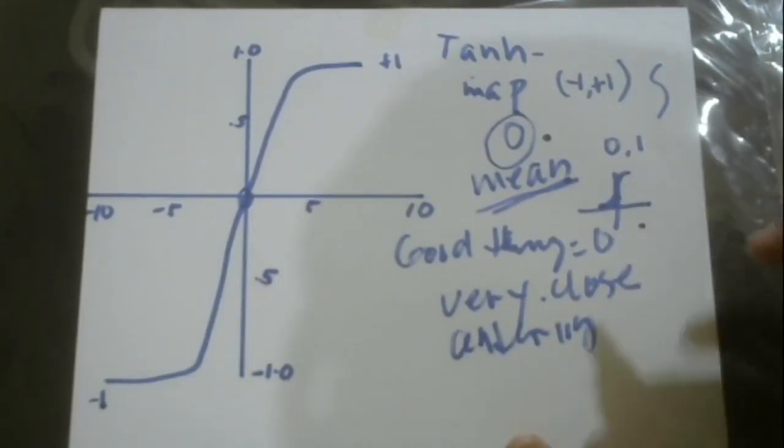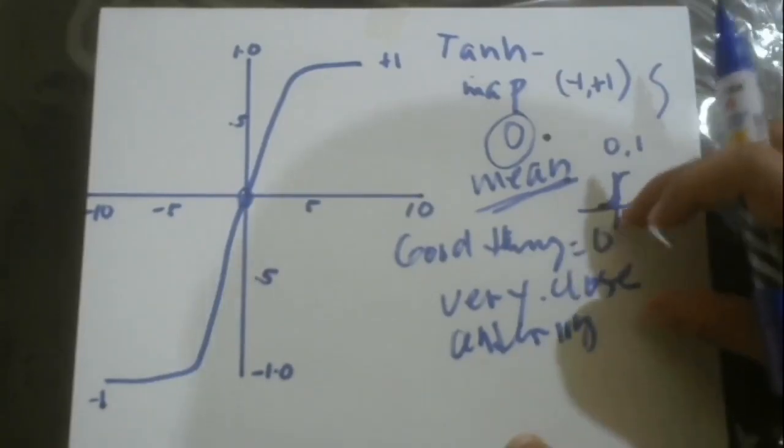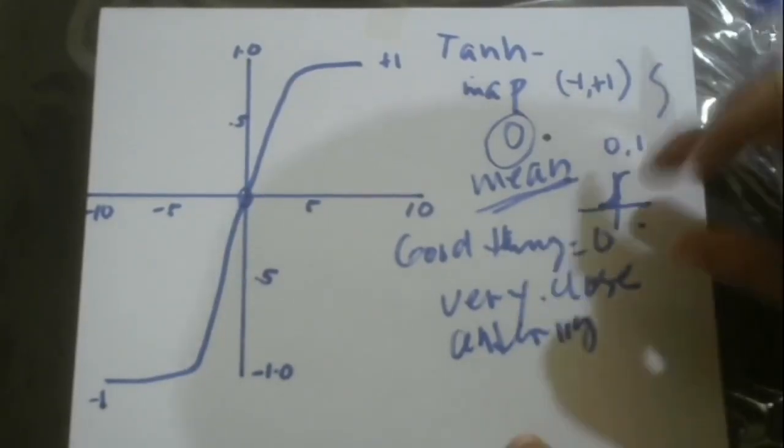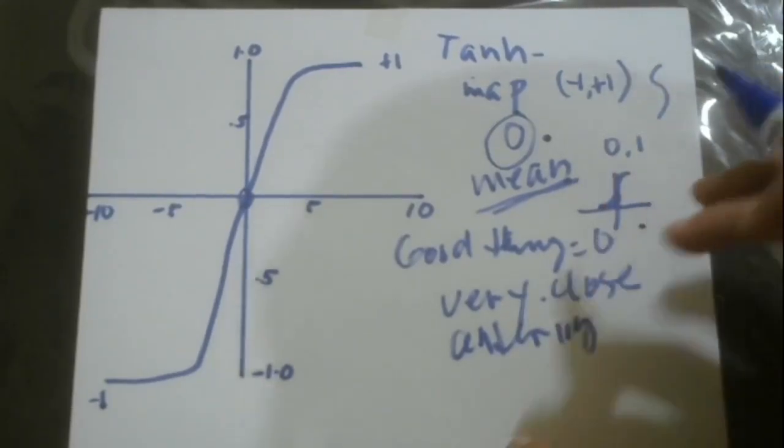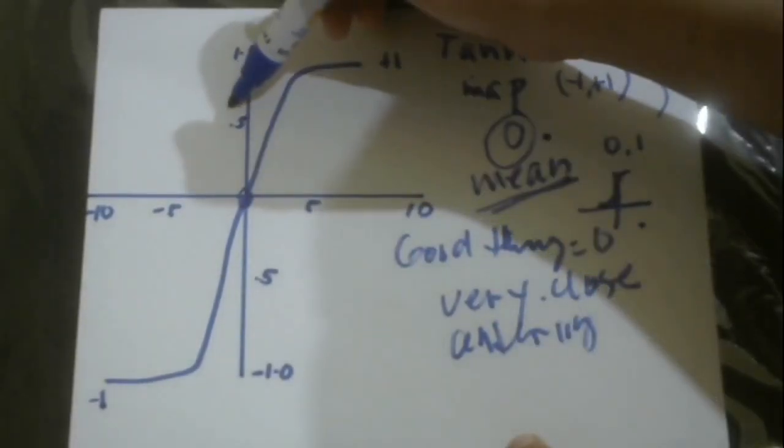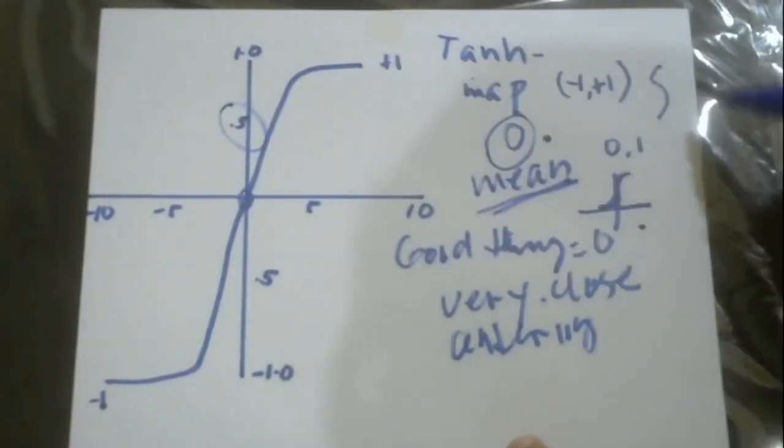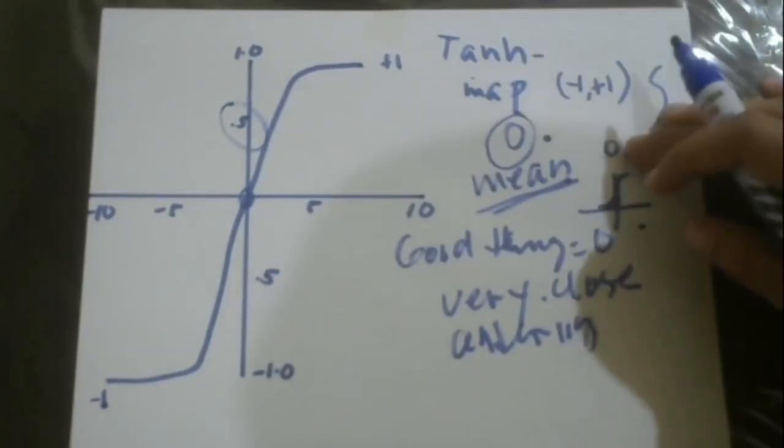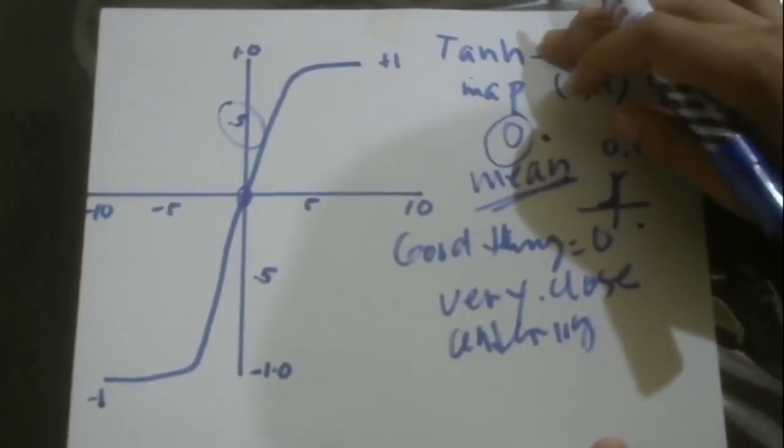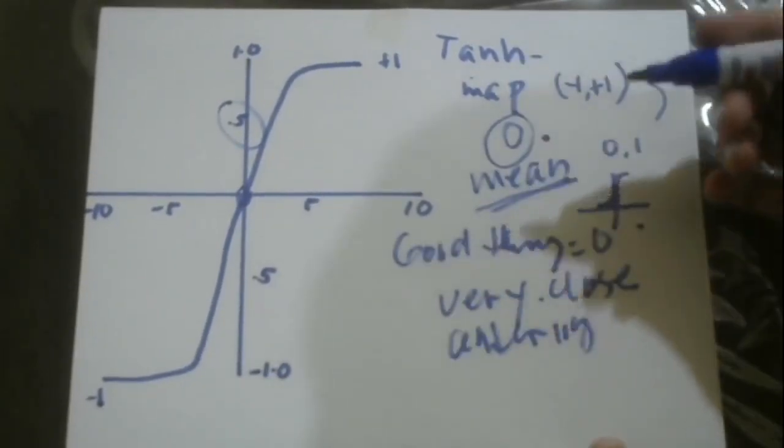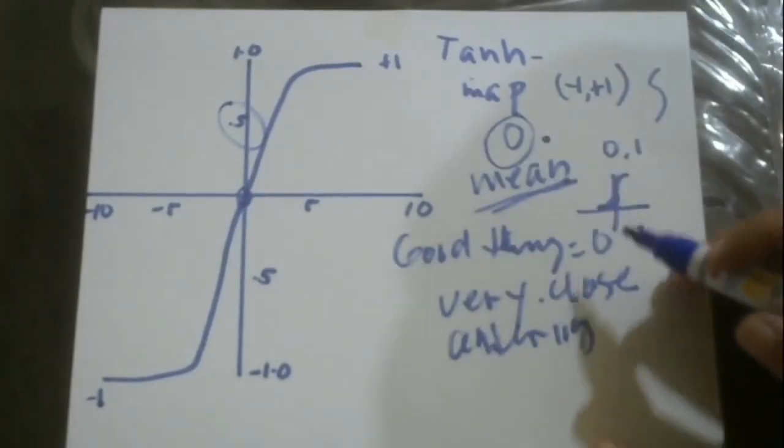When we have convergence at zero or very close to zero, this makes learning for the next layer much easier compared to the 0.5 convergence of sigmoid. Also, the gradient of tanh is stronger in comparison to sigmoid.